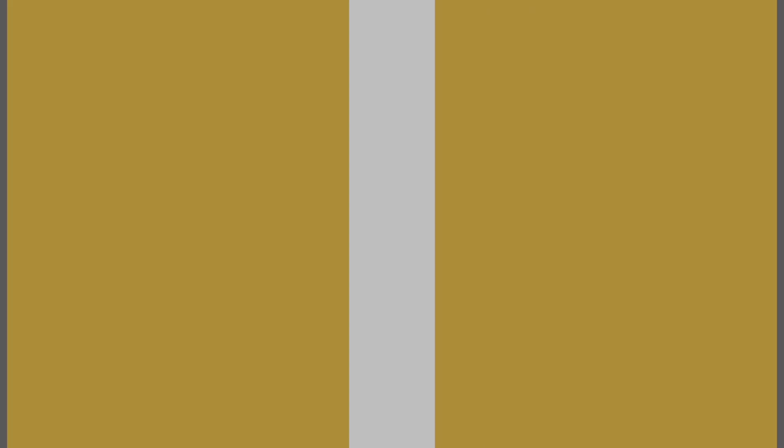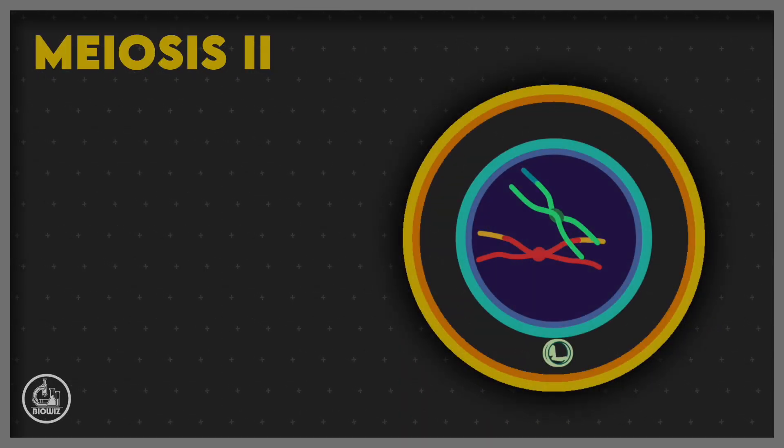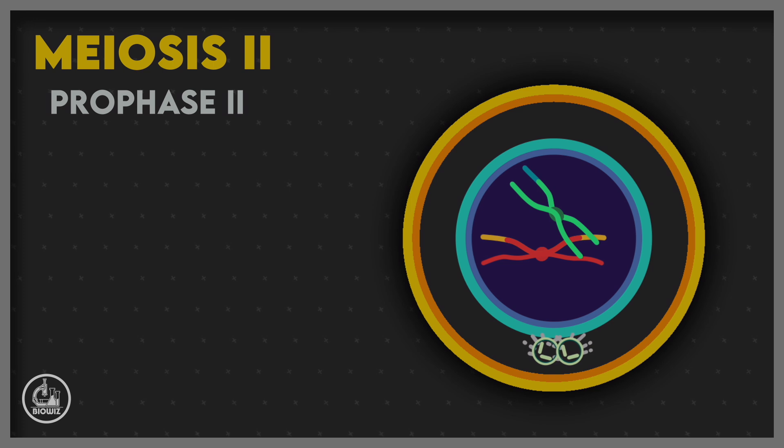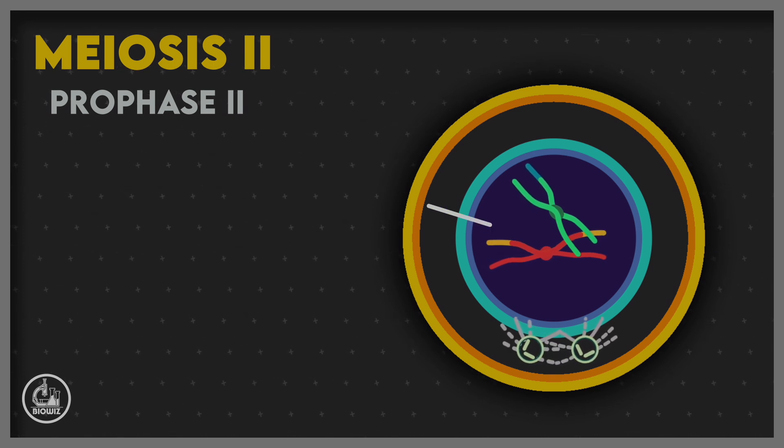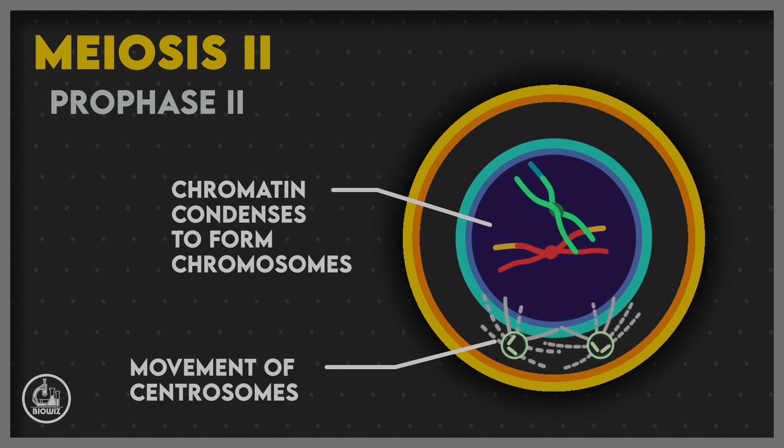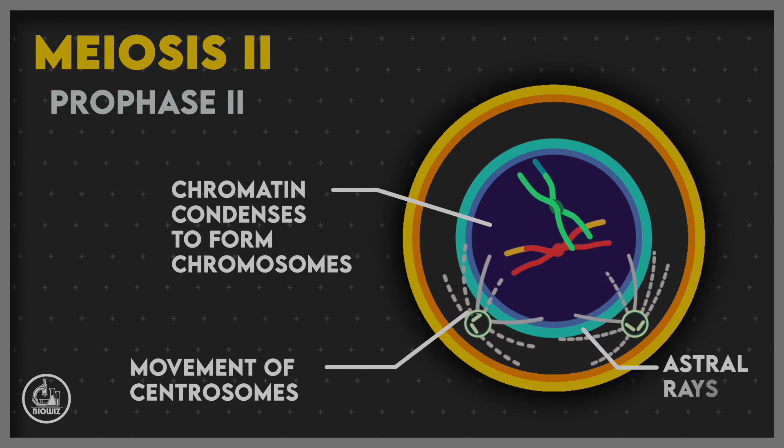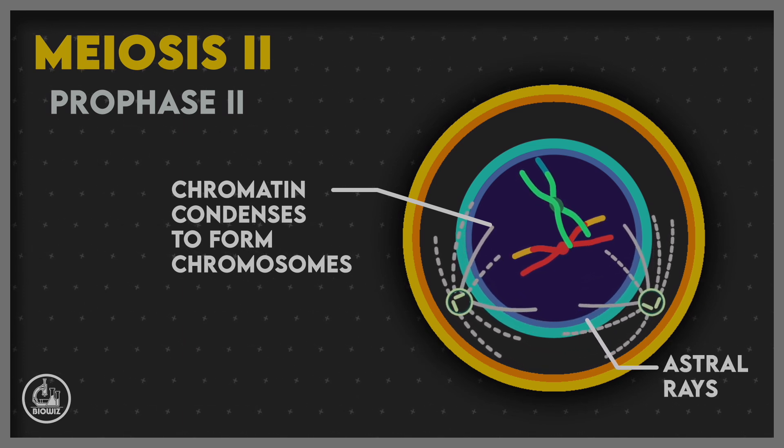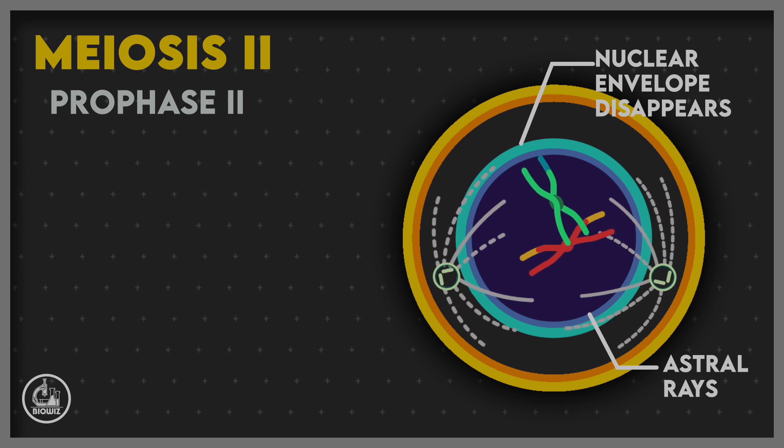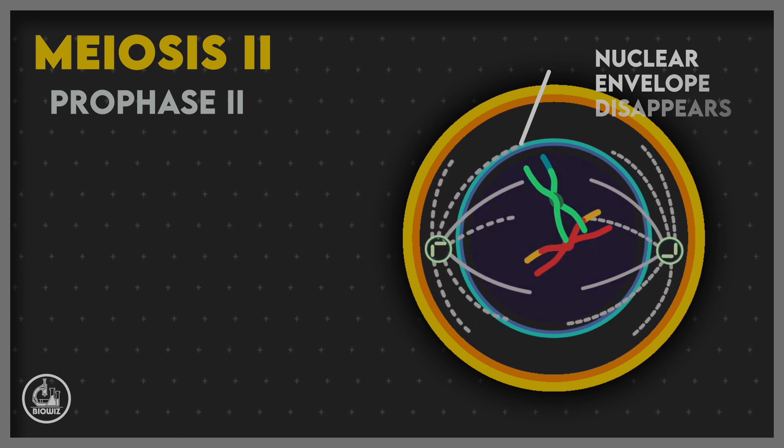Meiosis II is exactly the same as mitosis. In prophase II, the partially decondensed chromosomes are completely condensed. Centrosomes start moving towards poles, and astral rays arise from them. At the end of prophase II, nuclear envelope and nucleolus completely disappear.